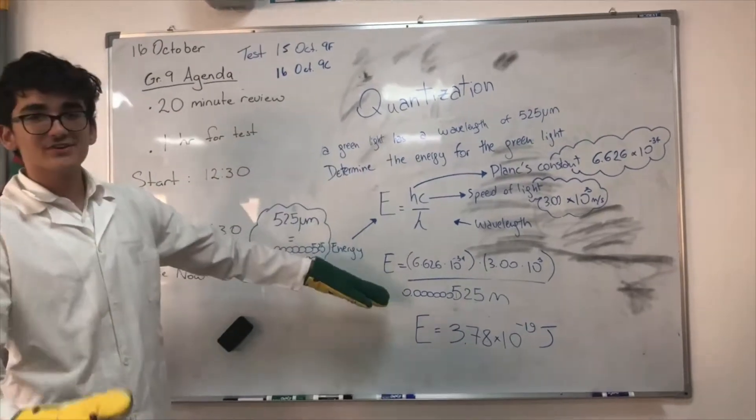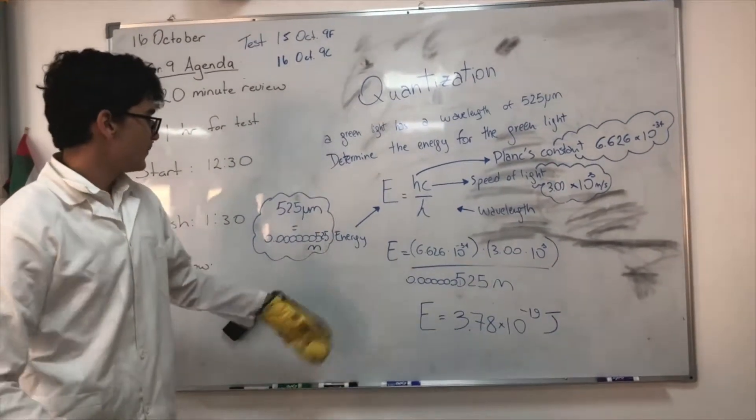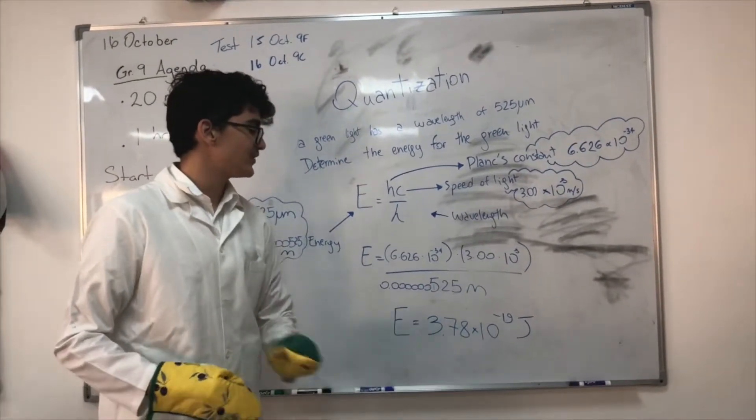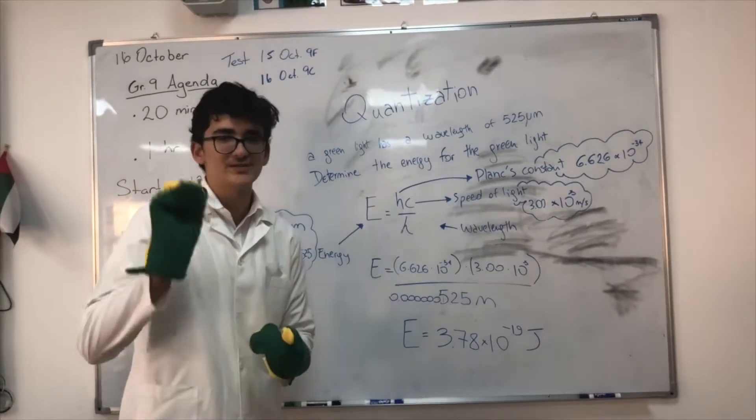And then, you have to convert it. Then, you just divide it normally. Once you divide it, the answer will become energy is 3.78 times 10 to the power of negative 19 joules, which is a really, really small number.